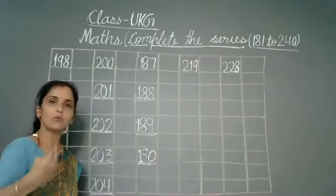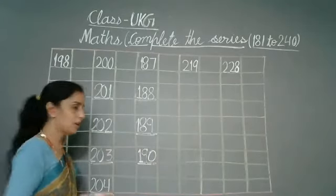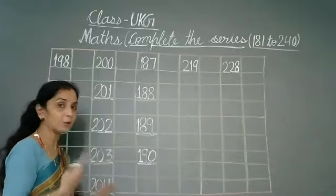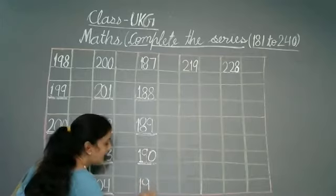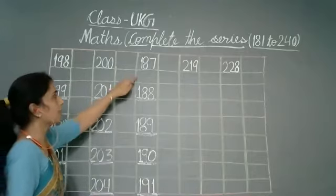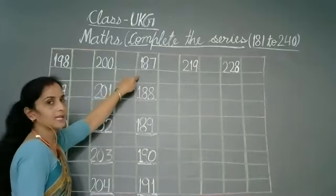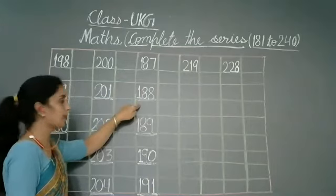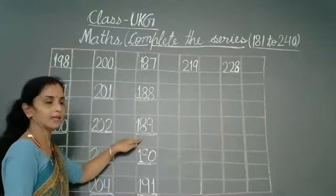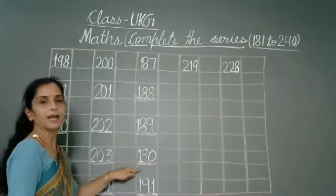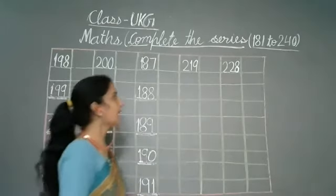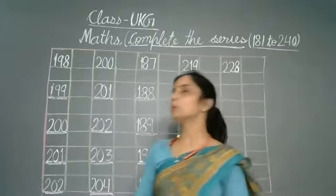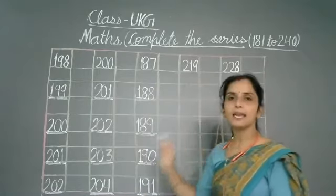After one hundred eighty-nine comes one hundred ninety. Some children get confused here. After nine comes ten, so we write zero and keep the one. So one hundred eighty-nine, one hundred ninety, then one hundred ninety-one. Repeat with me: 187, 188, 189, 190, 191.